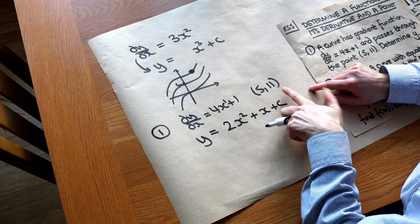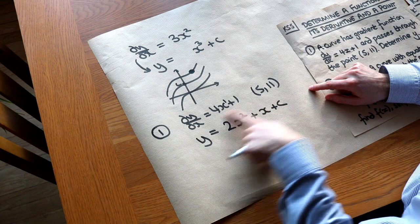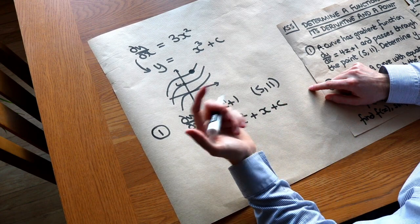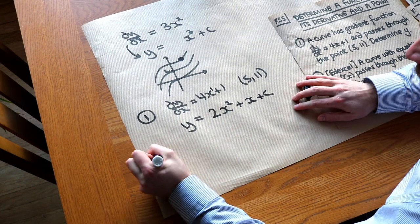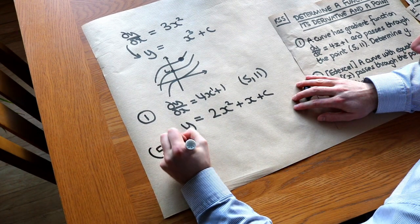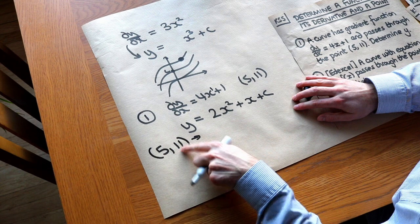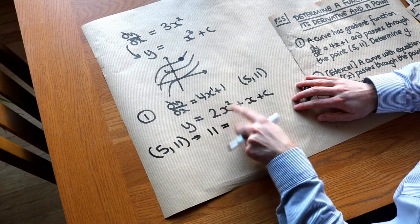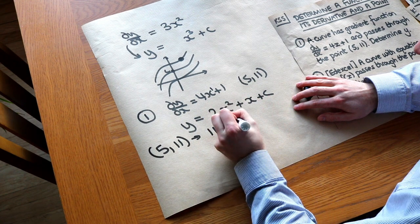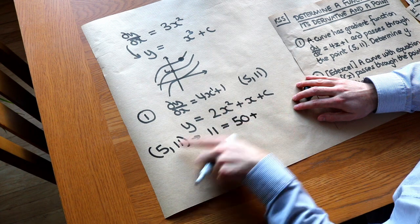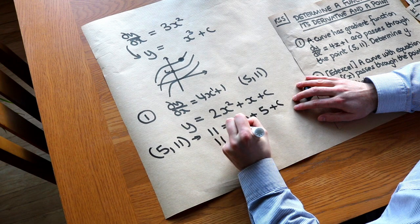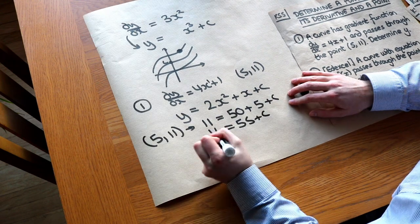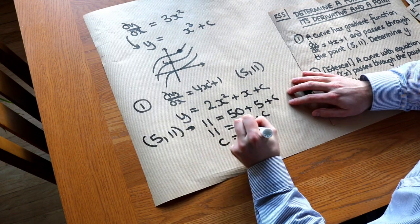But we know this is a point on the line, and therefore, this point must satisfy that equation. We've seen that principle time and time again, including at GCSE. So let's just substitute those values into the equation. So y = 11 is equal to 2 times 5², which is 50, plus x, which is 5, plus c. So 11 = 55 + c, and therefore c must be -44.